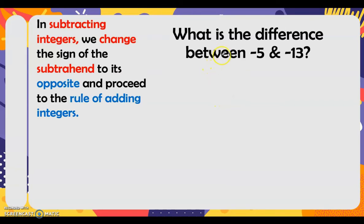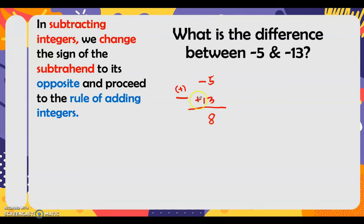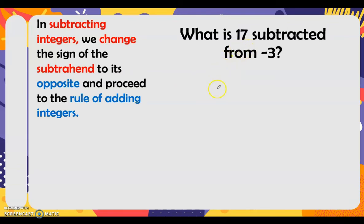Next: what is the difference between negative 5 and negative 13? We write negative 5 minus negative 13. We change the sign of the subtrahend — negative 13 becomes positive 13 — giving us negative 5 plus 13. Since they are unlike sign, we subtract: 13 minus 5 is 8. Copy the sign of the greater absolute value — the sign of 13 is positive — so our answer is positive 8.